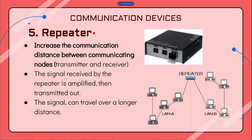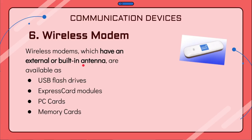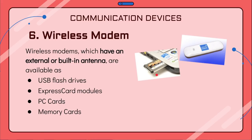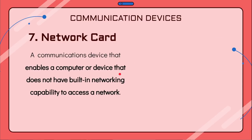However, repeaters are almost outdated and have been replaced by hubs and switches. Next we have the wireless modem. Wireless modems have an external or built-in antenna and can come in the form of a USB flash drive, ExpressCard modules, PC cards, and memory cards. Some smartphones can also function as a wireless modem — have you heard of a mobile hotspot? A mobile hotspot lets your mobile device be tethered to a PC or another mobile device to connect to the internet wirelessly.